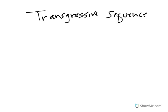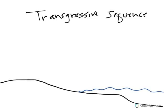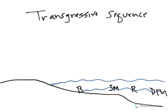In a transgressive sequence, I'm going to start here. Here we are. So let's say here's our water level at time one — here I have the beach. A little bit further out is the shallow marine, then the reef, then the deep marine. Our next time, sea level rises. The beach migrates inland. So here we have the beach, then the shallow marine, then the reef, then the deep marine.